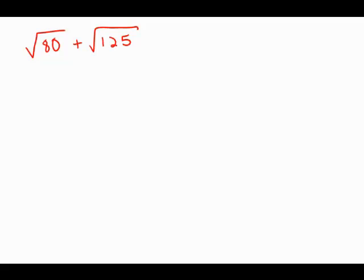Here, we're asked to simplify radical 80 plus radical 125. So how are we going to go about this?